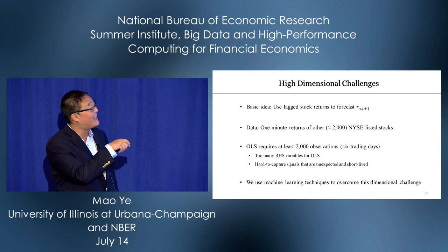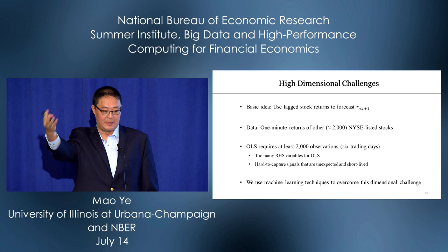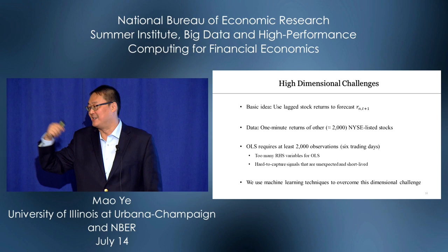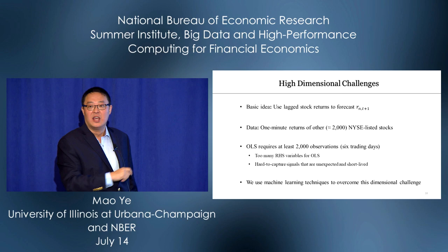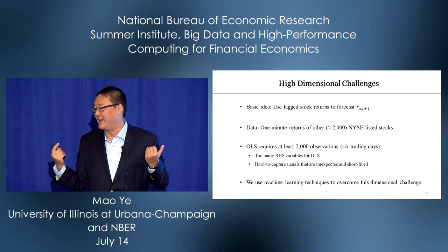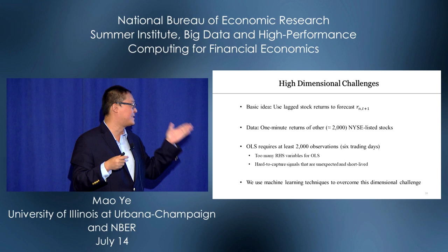We face a high-dimensional challenge at a minute-by-minute horizon. The basic idea: use lagged returns of other stocks to predict the return of a given stock. If the universe is NYSE-listed stocks — about 2,000 of them — each minute you get one observation. To run OLS regression you need 2,000 observations, which is six trading days. There are too many right-hand-side variables, especially when signals are short-lived.